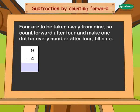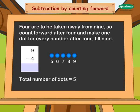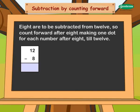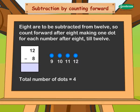Four are to be taken away from nine, so count forward after four and make one dot for every number after four, up to nine. The total number of dots equals five; therefore nine minus four equals five. Eight are to be subtracted from twelve, so count forward after eight, making one dot for each number after eight up to twelve. The total number of dots equals four; hence twelve minus eight equals four.